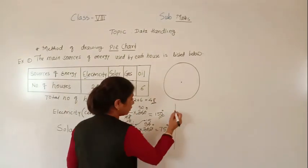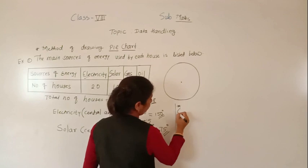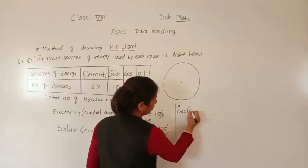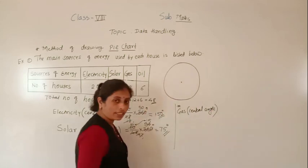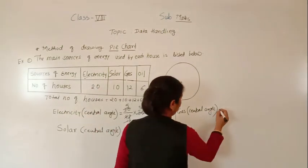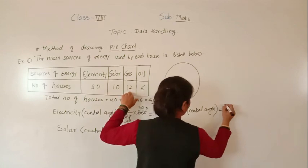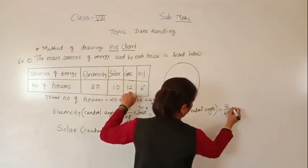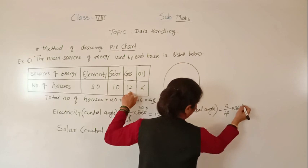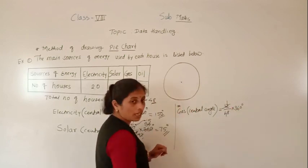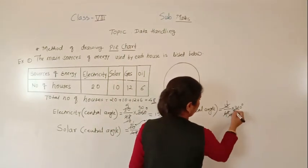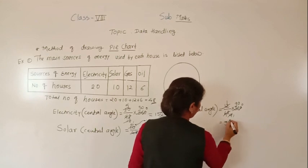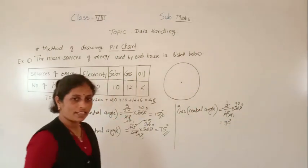For gas: 12/48 × 360. Simplifying: 12 fours are 48, then 4 ones are 4, 9 fours are 36, giving 90 degrees. So the central angle for gas is 90 degrees.